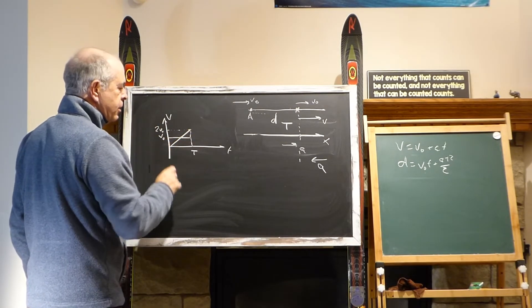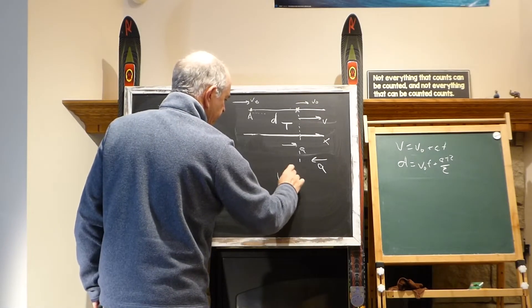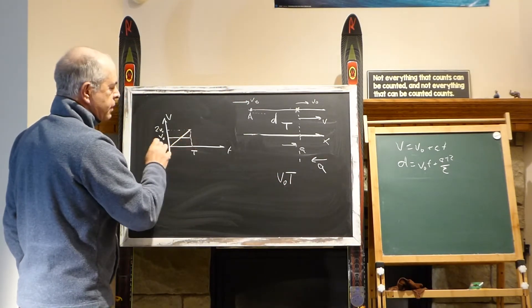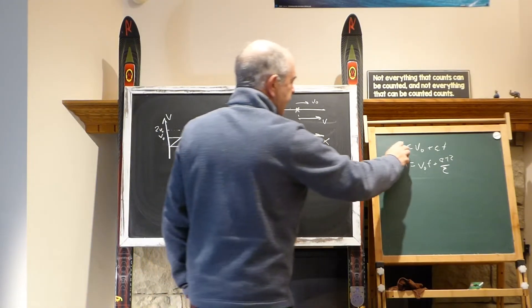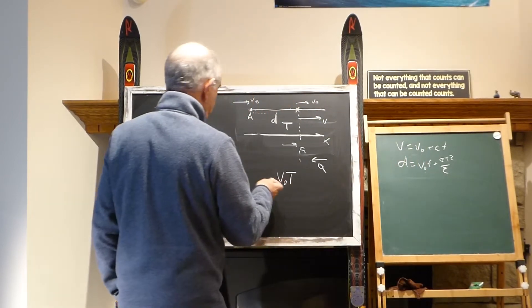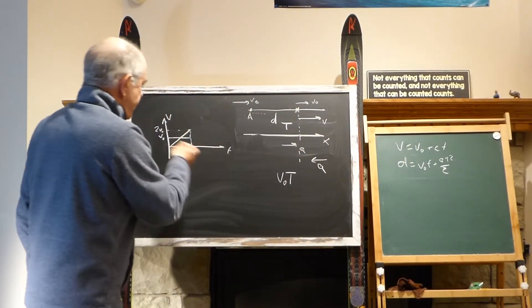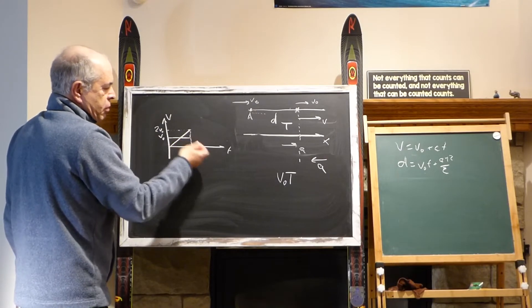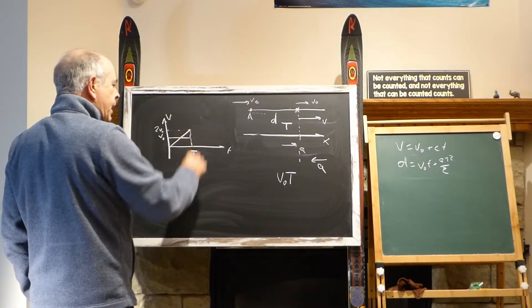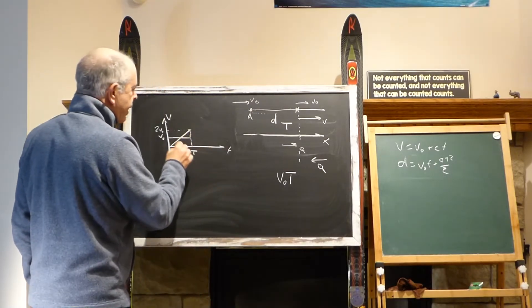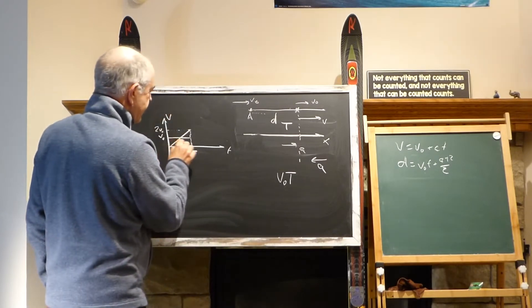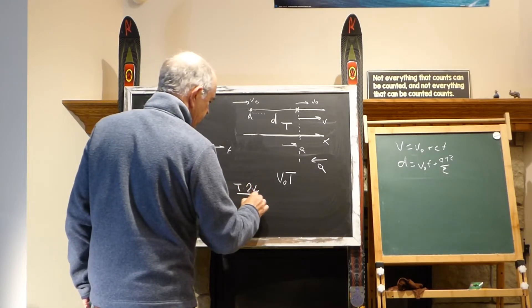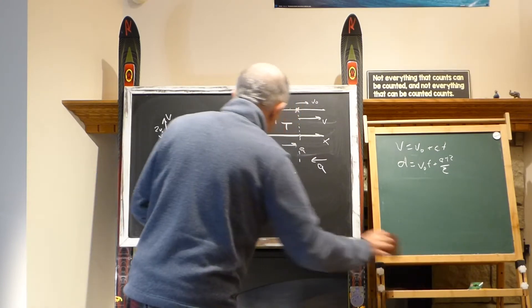They cover the same distance. That's why at the same point there is the same place. This area is v0*t, and this area for the triangular we can calculate. It is t multiplied by 2v0 and divided by 2, so it's exactly the same area and the same number.